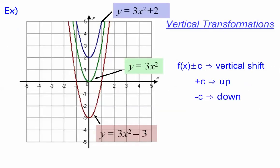Let's take a look at the transformations. First, vertical transformations, which means shifting up and down. Here I've got three different parabolas graphed. The first one in green is y = 3x². In blue, we have y = 3x² + 2. In red, it's y = 3x² - 3. The plus 2 moved it upwards 2 units, and the minus 3 moved it downward 3 units.